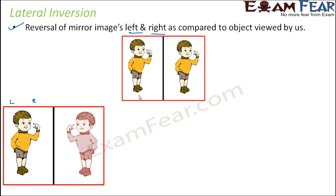From what we know, the distance of the object from the mirror is equal to the distance of the image from the mirror. So if this is the mirror and this is the object, this has to be the image, and this distance equals that distance. The entire image formation happens on the concept that each part of our body is considered as a point, and for each of those points an image is formed on the other side of the mirror.